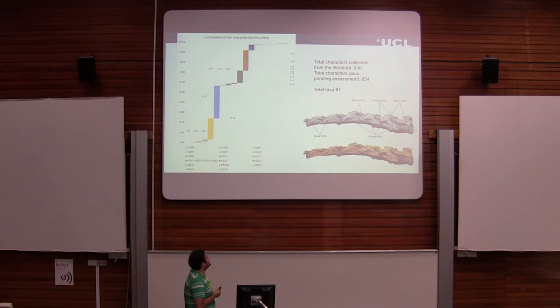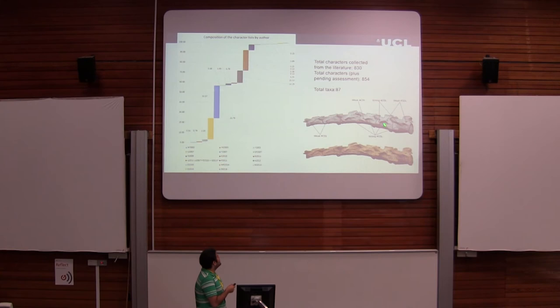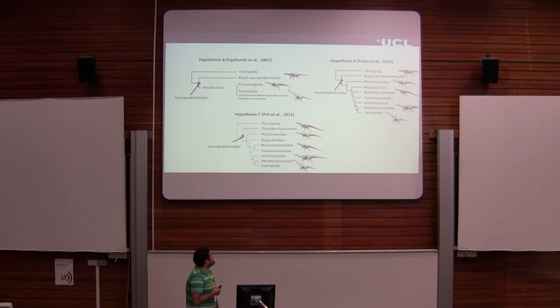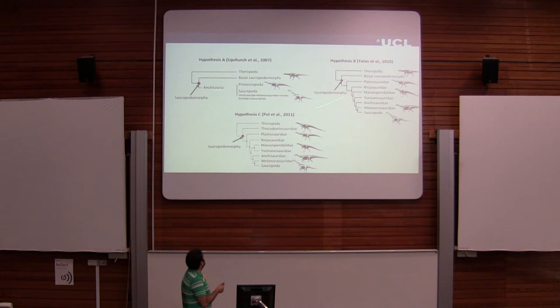This is a Plateosaurus neck. Most of the features that we attributed to basal sauropodomorphs are simply coded as primitive, whereas all of these variants — for instance in the laminae and vertebrae — are hidden by the current coding. I'm right now using 87 taxa, which shows how important it is to have a reviewed biophylogenetic background.